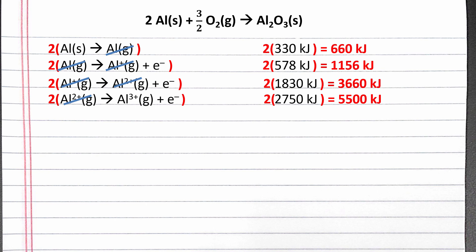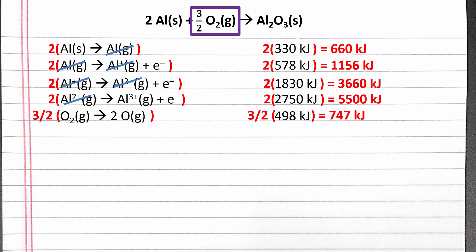The next information we're given is the bond energy for an oxygen-oxygen double bond. This is the amount of energy required to break the double bond and form two unbonded oxygen atoms. This will be the only equation that contains O₂ gas. We want three-halves O₂ gas as a reactant in the overall reaction, so we need to multiply the bond energy equation by three-halves.